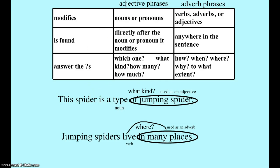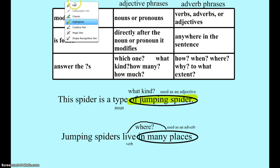Looking at this sentence: 'This spider is a type of jumping spider.' What students in class are doing is highlighting their phrases. 'Of jumping spider' is the prepositional phrase, and we want to figure out what it's describing. Going through the options — 'this of jumping spider,' 'spider of jumping spider,' 'is of jumping spider,' or 'type of jumping spider' — it is 'type of jumping spider.'